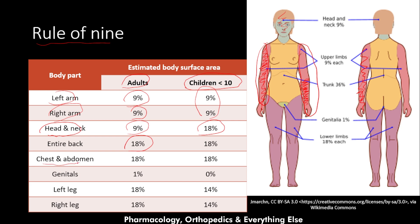The chest and abdomen area is 18 percent for both adults and children, and the entire back is also 18 percent for both, making the full trunk 36 percent. If the genitals are burned, adults receive one percent more, while children receive zero percent. The left and right legs are 18 percent each in adults and 14 percent each in children. You then add all burned areas together to get the total body surface area affected by the burn.